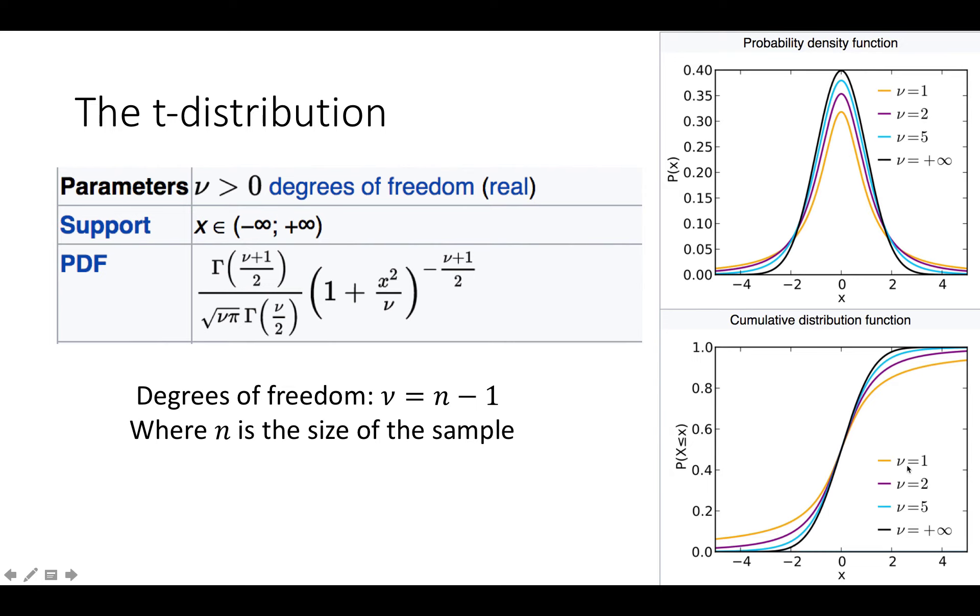But if the number of samples is small let's say it's six so we just get five samples then there is a difference. And because our certainty depends on also the accuracy by which we can estimate the variance or the standard deviation.